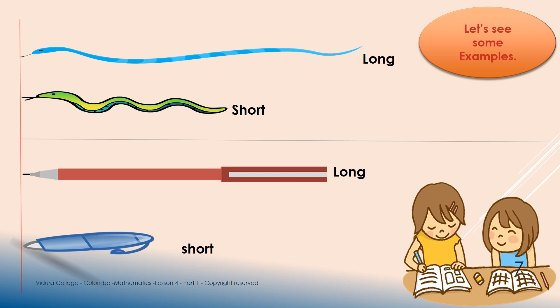This is our next example. There are two serpents. One is green in colour, other one is blue in colour. Can you recognise the long serpents? Is it blue or green?